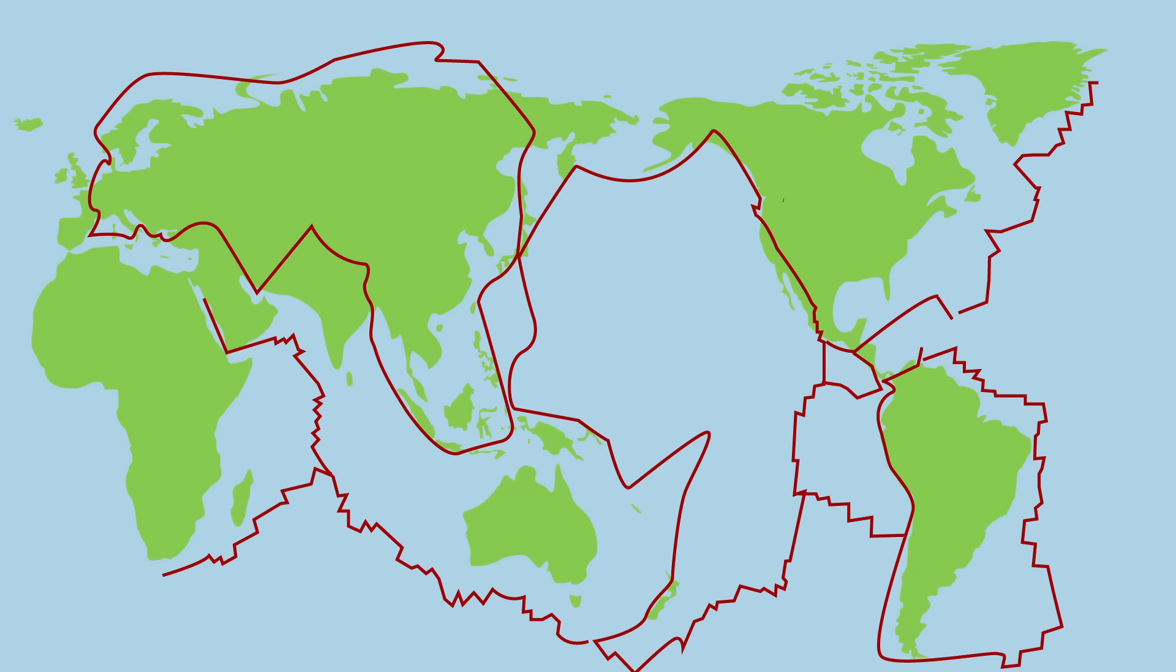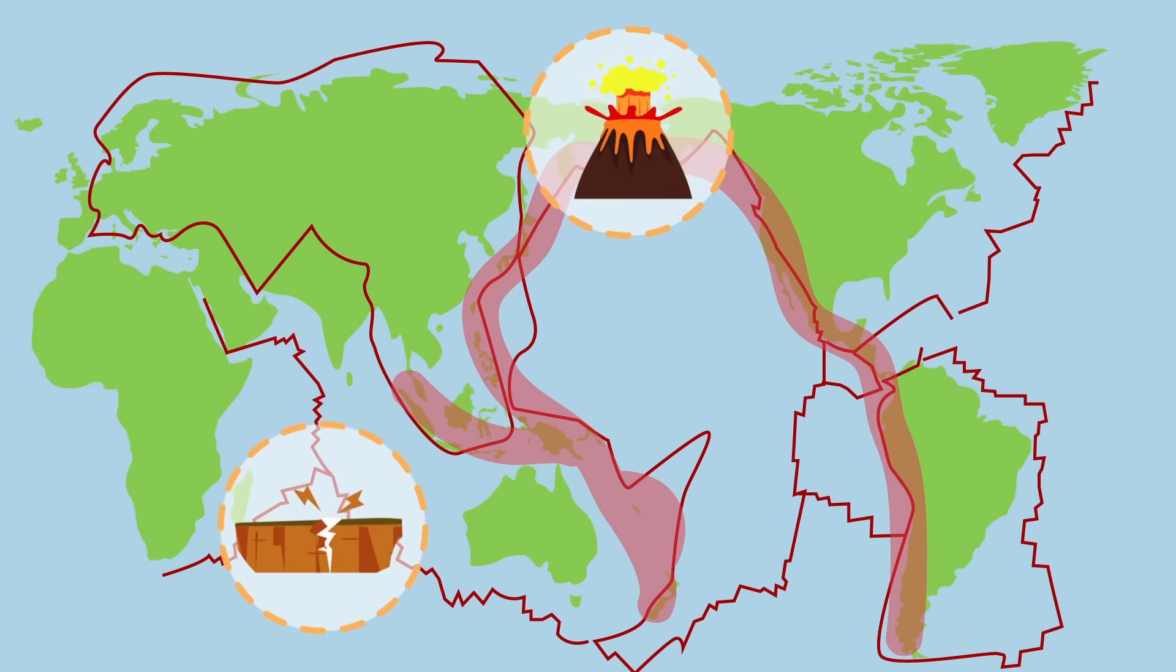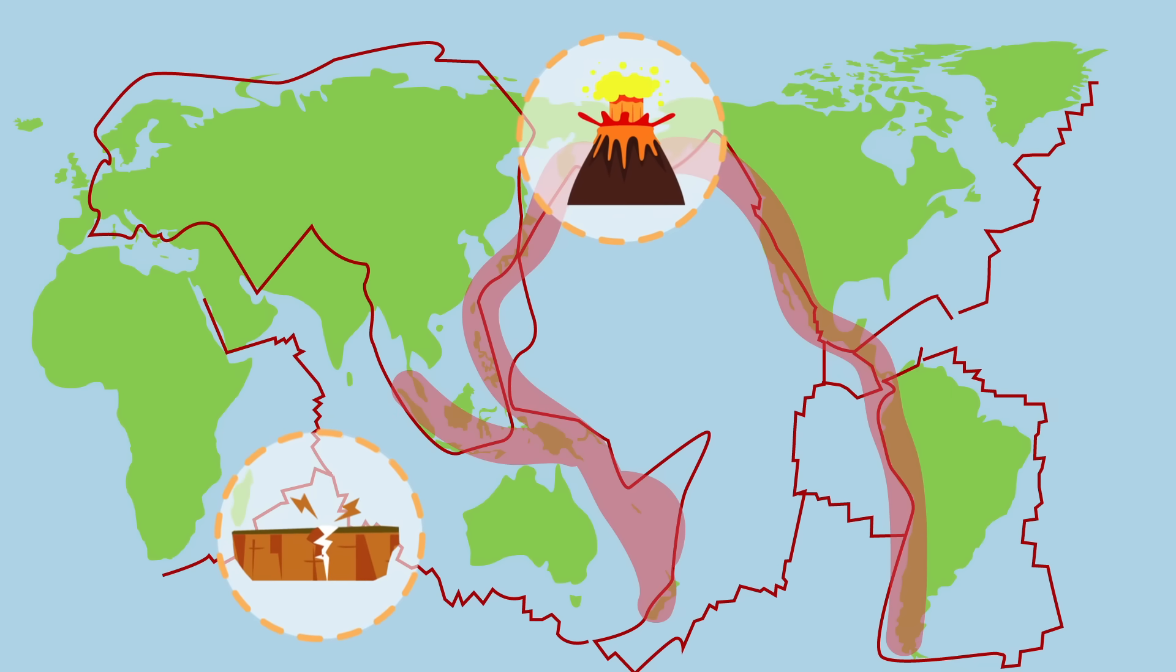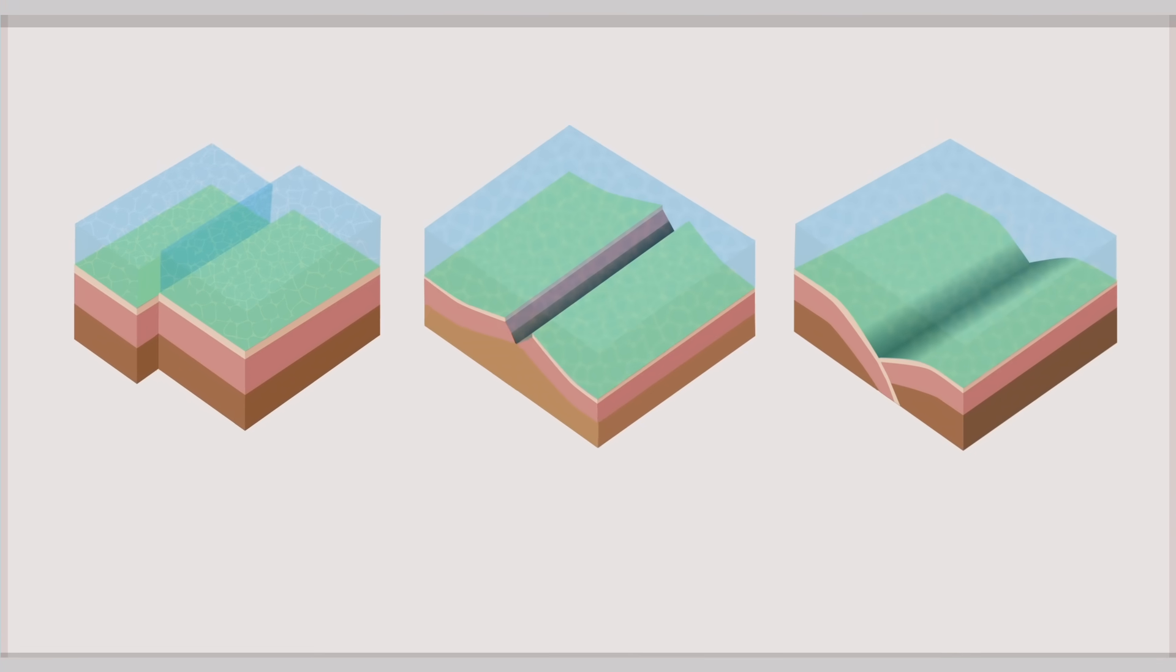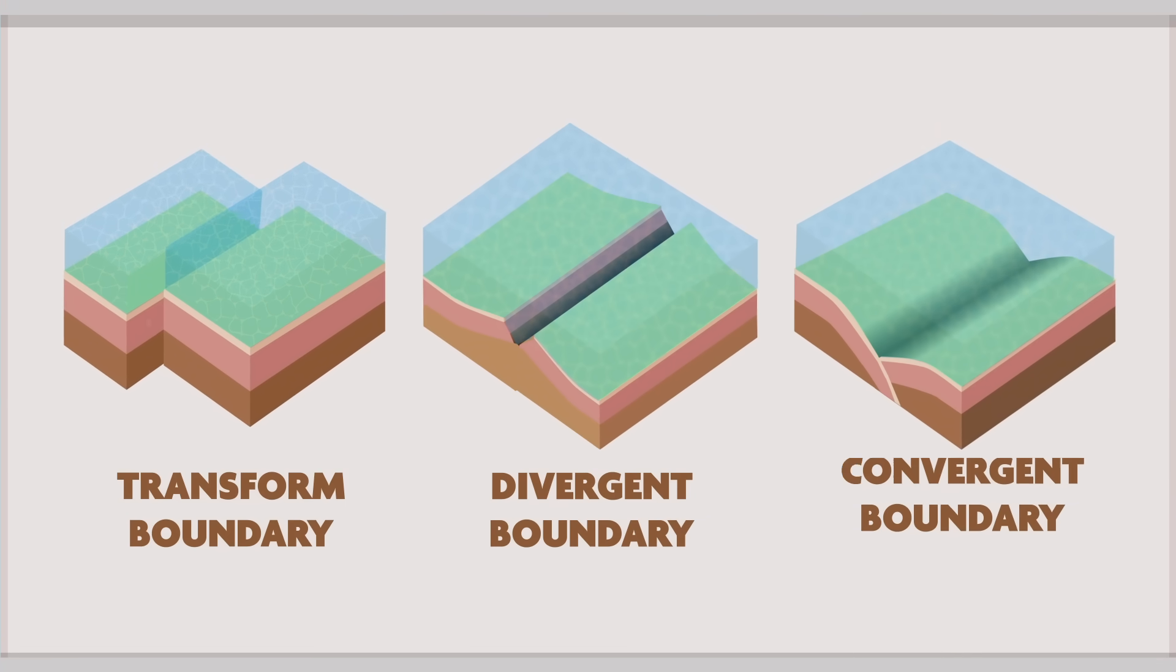The Pacific plate is an example of an oceanic plate, and the Eurasian plate is an example of a continental plate. The relative motion of these plates causes crustal movements such as earthquakes and volcanic eruptions at plate boundaries. 90% of Earth's earthquakes and 75% of its volcanic activity occurs in what is called the ring of fire. There are three types of plate boundaries: transform boundaries, divergent boundaries, and convergent boundaries.